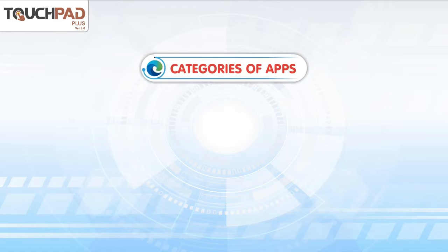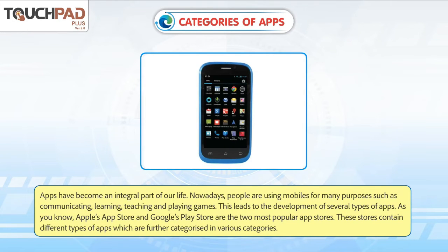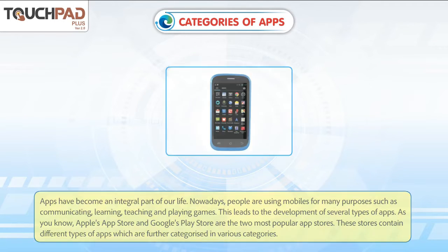Categories of Apps. Apps have become an integral part of our life. Nowadays, people are using mobiles for many purposes such as communicating, learning, teaching and playing games. This leads to the development of several types of apps. Apple's App Store and Google's Play Store are the two most popular app stores. These stores contain different types of apps which are further categorized in various categories.